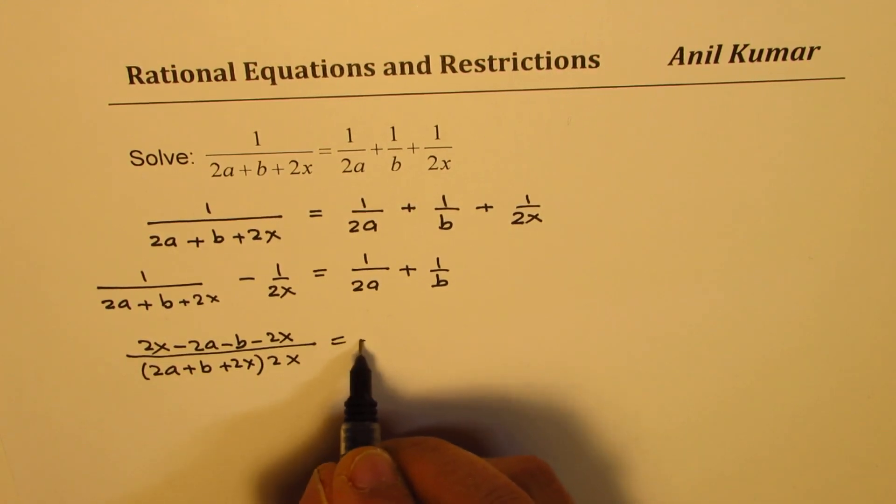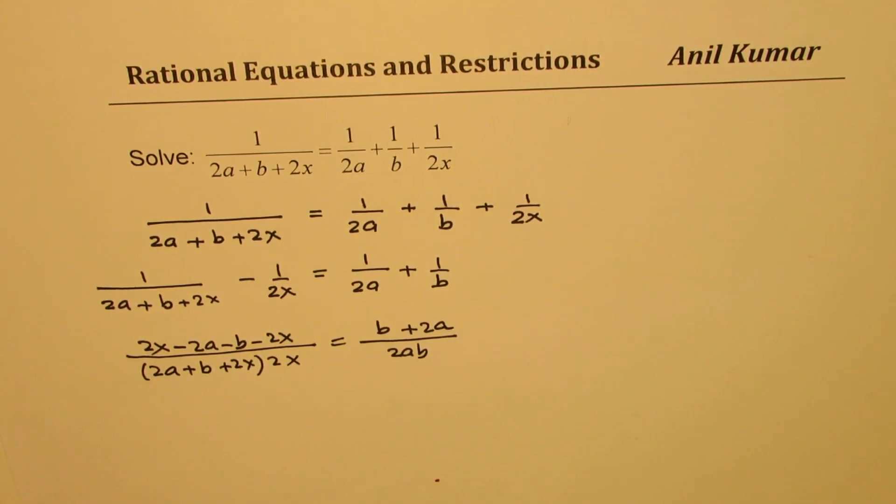On the right side, we will multiply, get 2ab. Cross multiply, b plus 2a.